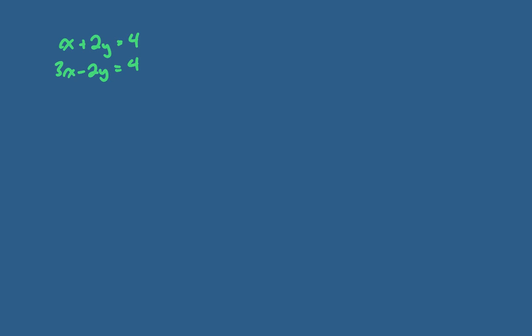Here is a third example of a linear system. I need to decide how to solve it by substitution — I either need an x-equals or y-equals form to substitute into the other equation. Right now I don't have either, so I need to rearrange. Looking at my equations, I notice there's a 'naked' x with no coefficient in equation 1, making it easy to rearrange to x equals negative 2y plus 4 — the same equation, just rearranged.